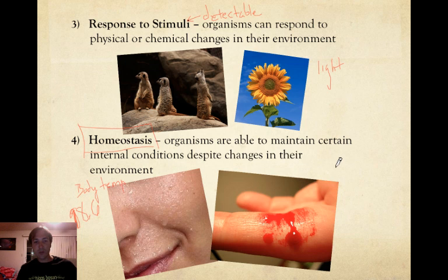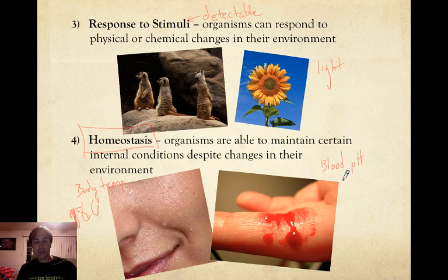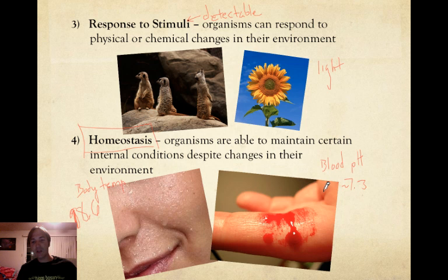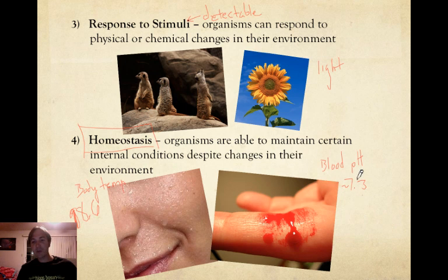Another example of homeostasis is maintaining blood pH. Think of it like the acid level within our blood. Our blood is actually not acidic — it's slightly basic. We need a blood pH of around 7.3. Different things we do throughout the day may cause this number to fluctuate a little bit, but there are different mechanisms in the body that will keep our blood at 7.3 despite those changes. If it goes up a bit, the body will immediately drop it back down to 7.3. If it drops a little, the body will push it back up to 7.3. We maintain 7.3 because that's where we need it.